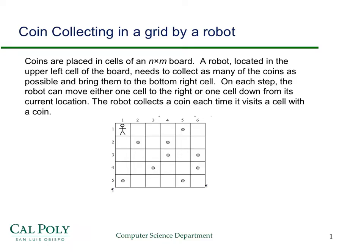The problem we're going to look at is coin collecting in a grid. You have a grid, and in the cells of the grid, some cells contain a coin. There's a robot in the upper left-hand corner, and the goal of the robot is to move from the upper left-hand corner to the lower right-hand corner and pick up as many coins as it can.